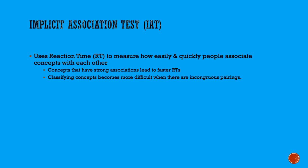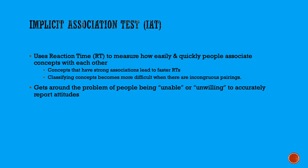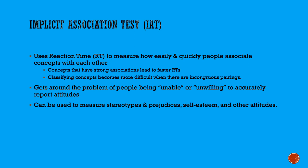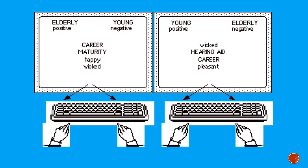Returning to the implicit association test, usually known as the IAT — don't worry too much about remembering all the exact details. The key thing to remember is that you're using a person's reaction time to a question as the measure of the attitude. This gets around the problem of people lying to you. You can also use this to measure stereotypes, prejudices, self-esteem, and all kinds of other attitudes.